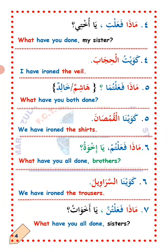Sitta, number six. Maza fa'altum? — What have you all done, brothers? Answer: Kawaina al-sarawil — we have ironed the trousers. Sarawil is the plural form of sarawal: sarawal means one trouser, sarawil means more than two trousers.